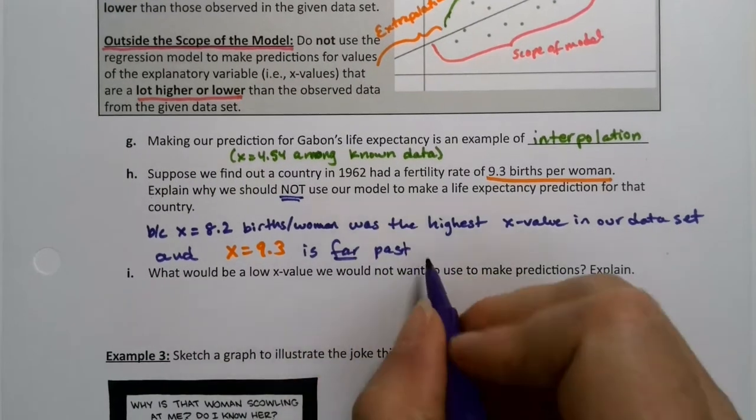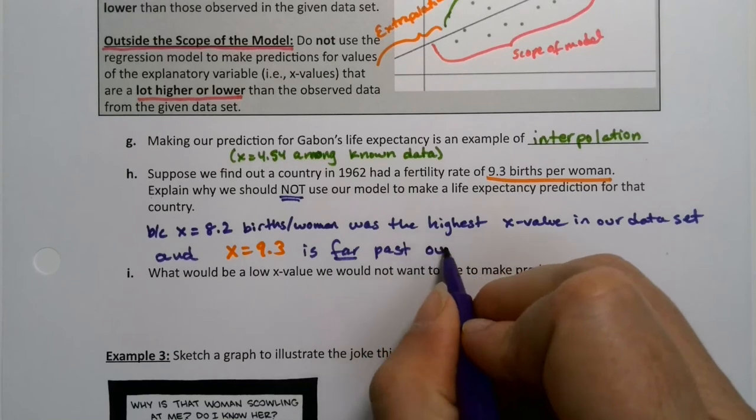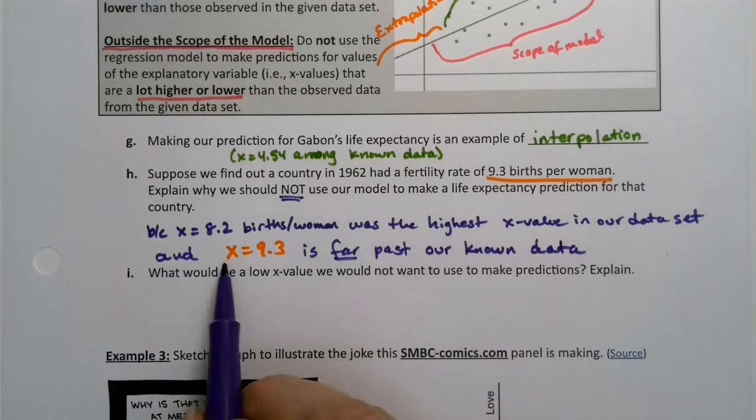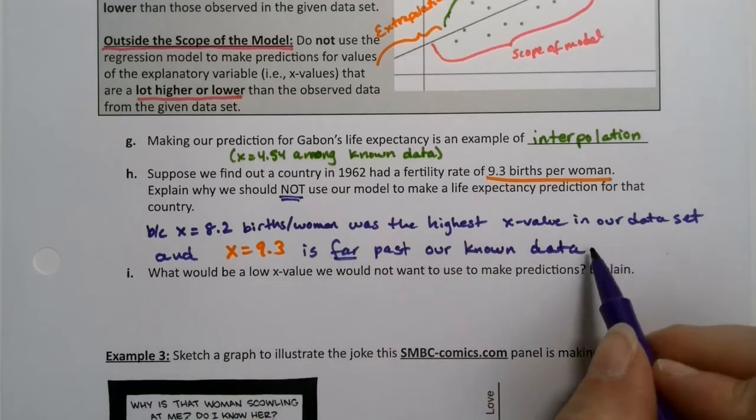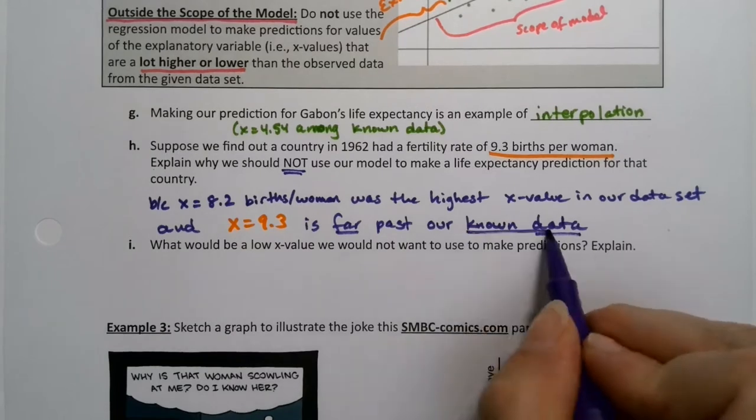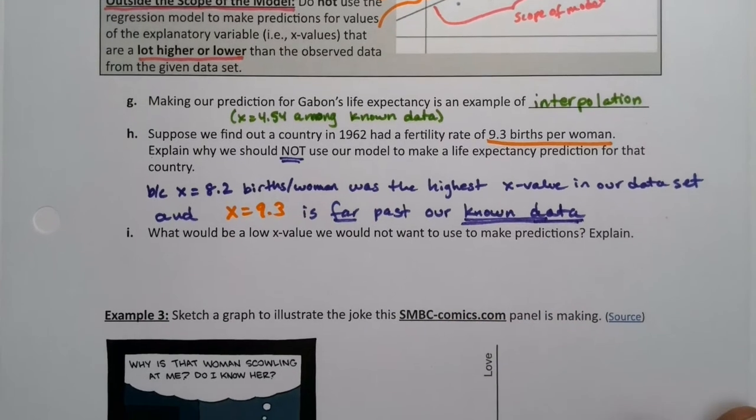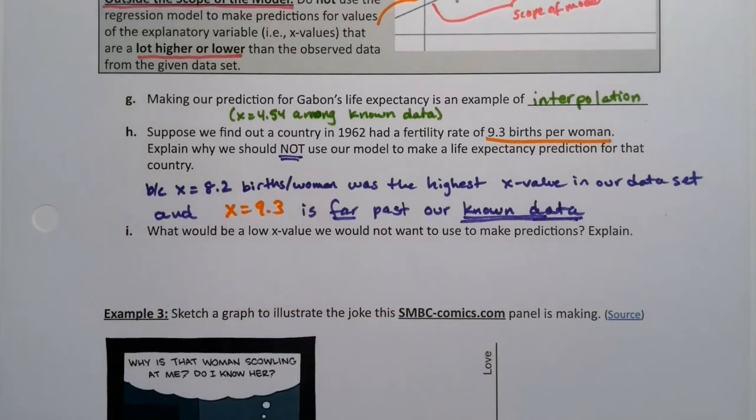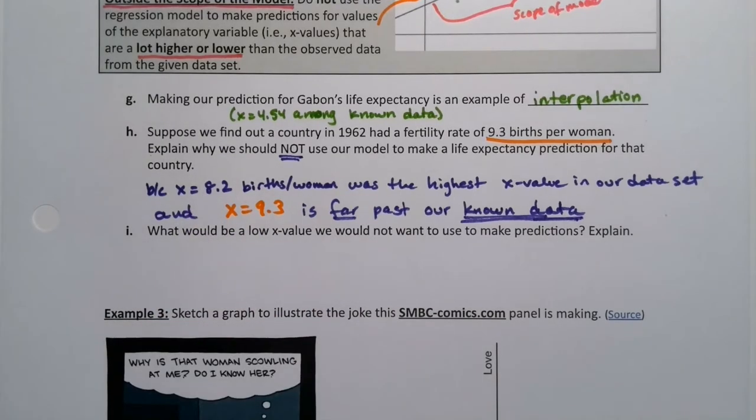And that's a judgment call I'm making based on the fact that it's not even on the graph. It's so far past our data set. X equals 9.3 is far past our known data set, because 9.3 is well past 8.2.